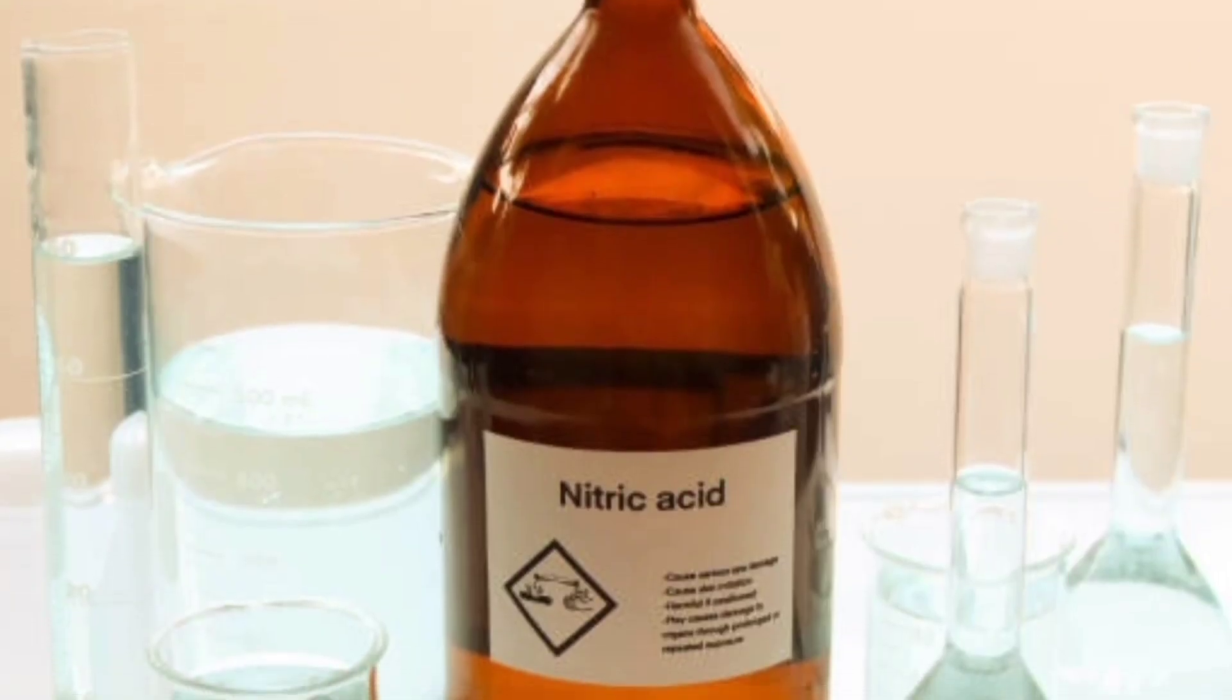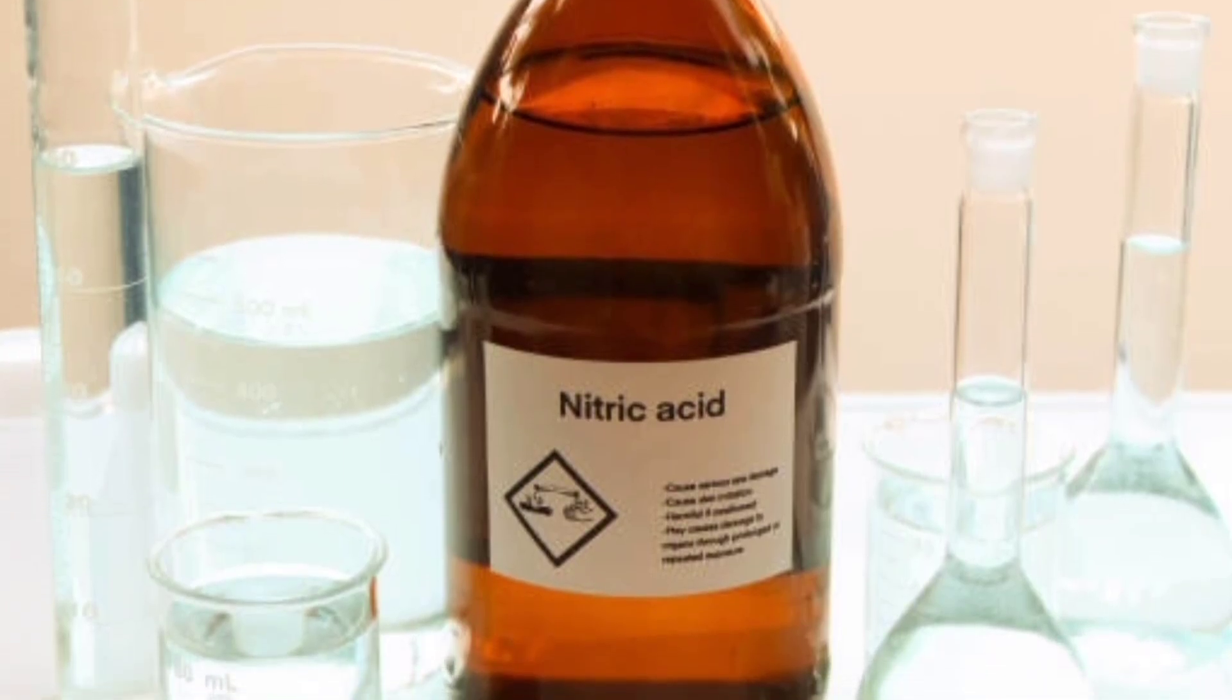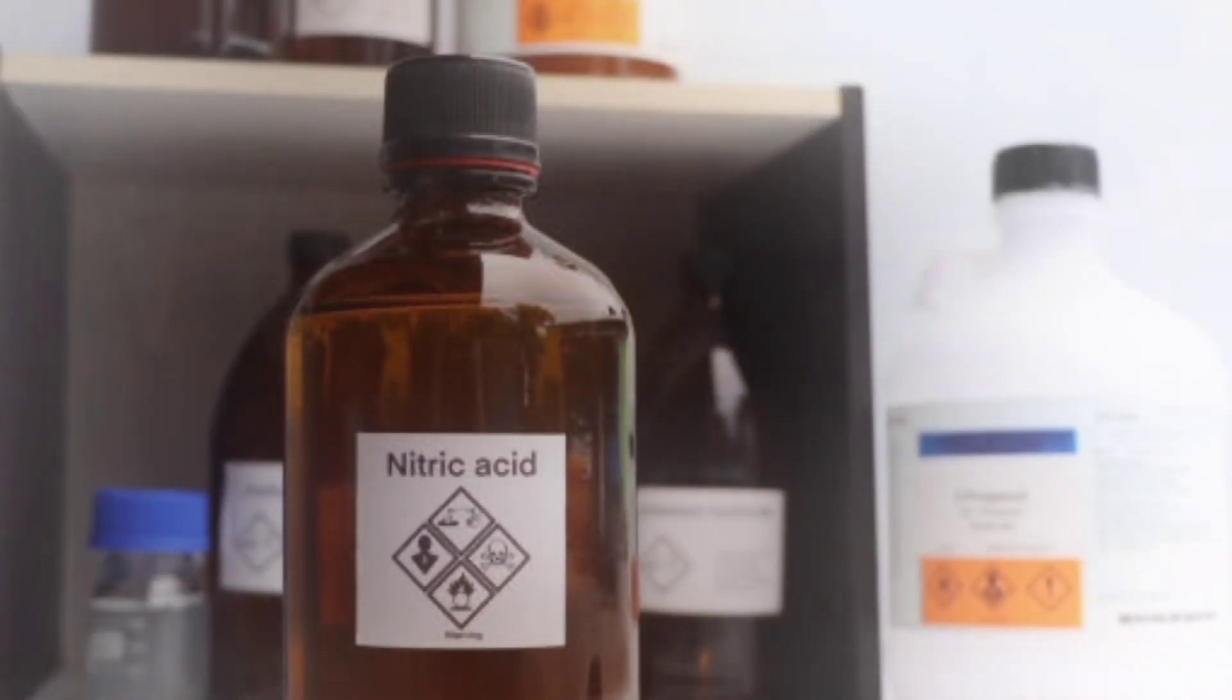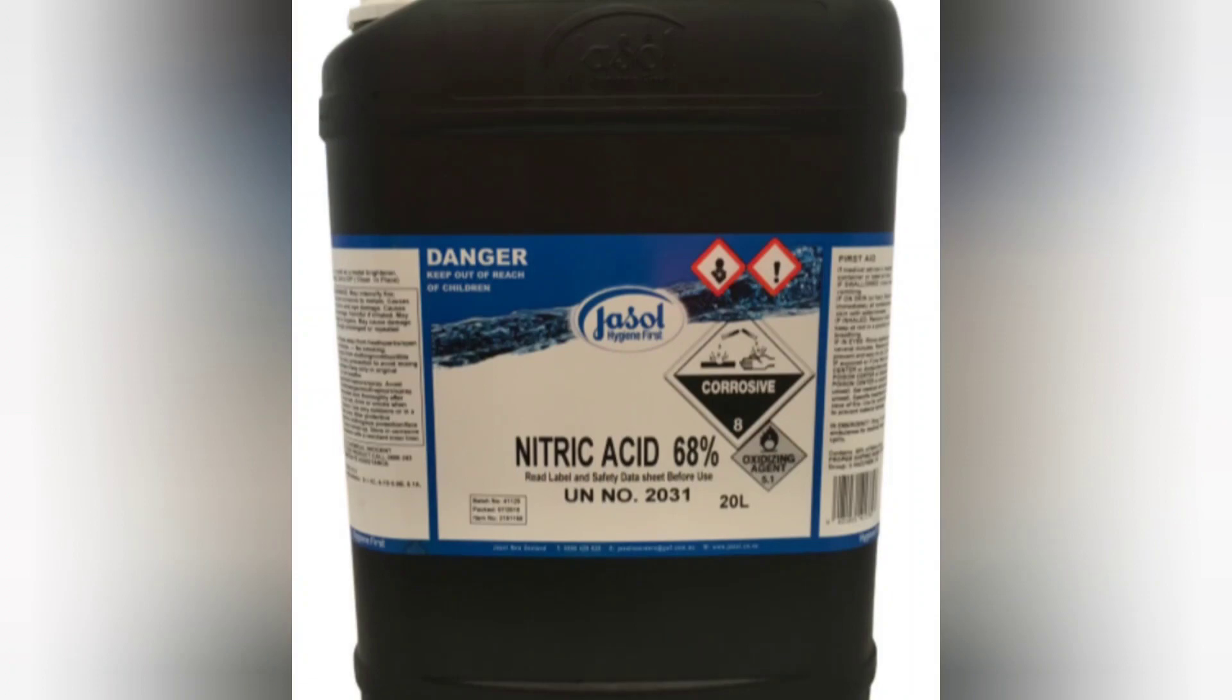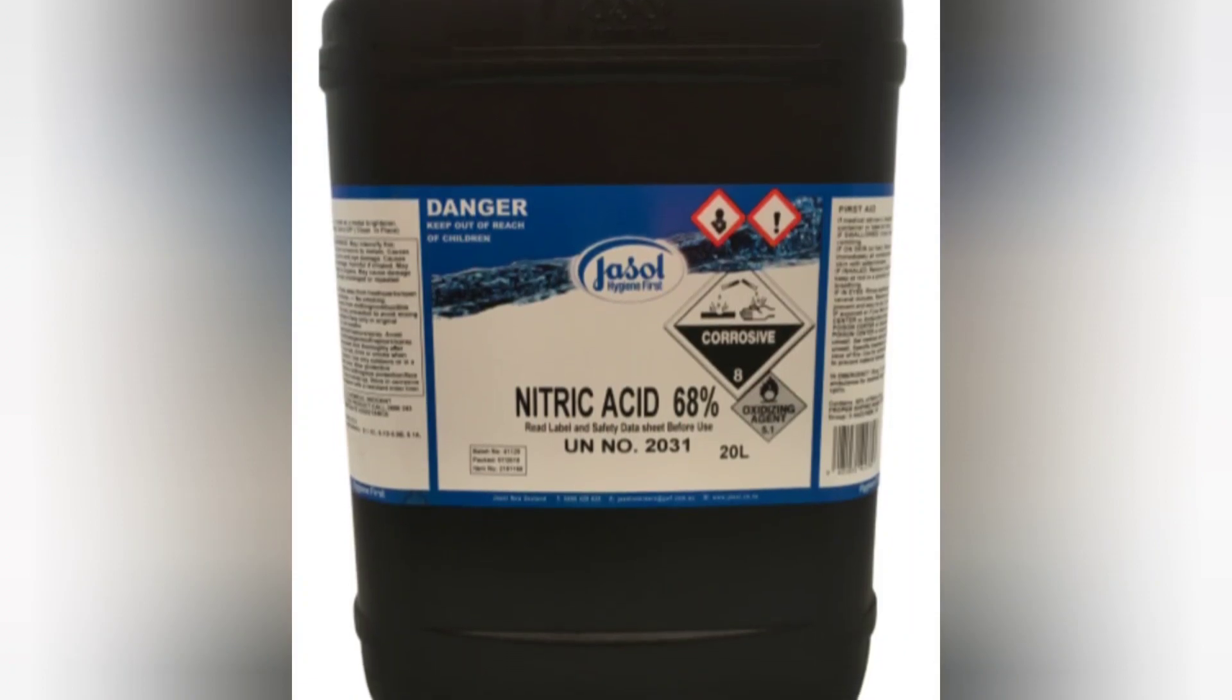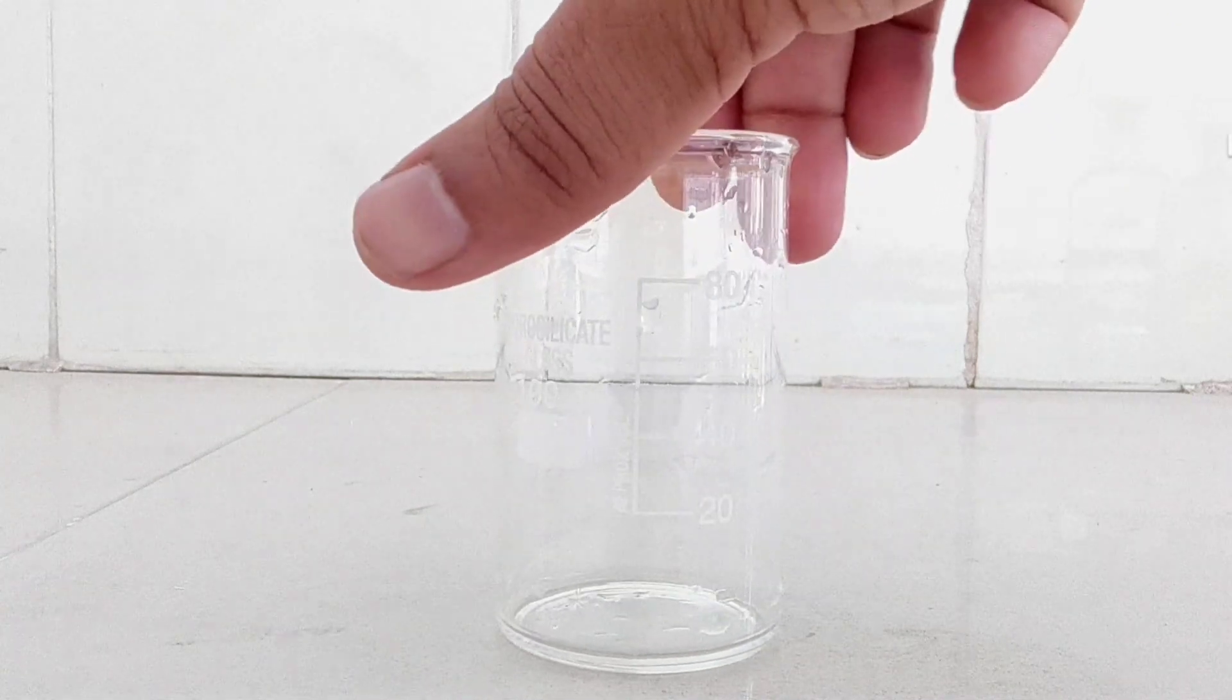The compound is colorless but older samples tend to be yellow cast due to decomposition into oxides of nitrogen. Most commercially available nitric acid has a concentration of 68% in water. When the solution contains more than 86% HNO3, it is referred to as fuming nitric acid.